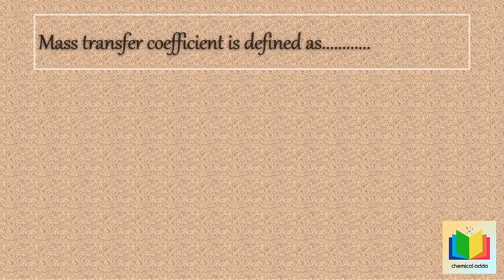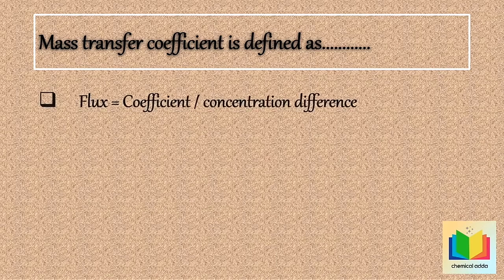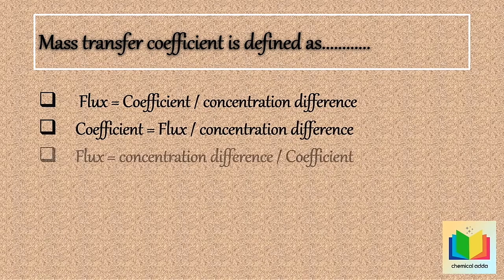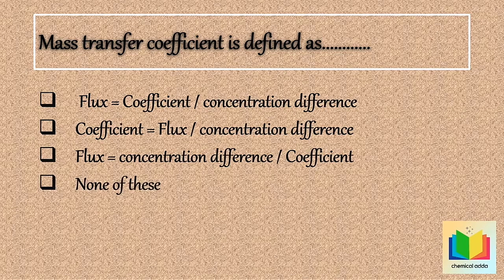First question: Mass transfer coefficient is defined as. (A) Flux is equal to coefficient divided by concentration difference. (B) Coefficient is equal to flux divided by concentration difference. (C) Flux is equal to concentration difference divided by coefficient. (D) None of these. Your time starts now.